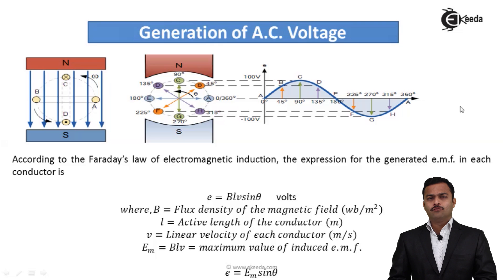So at that time, there won't be any cut of magnetic field by a conductor even if it is in motion. So what will happen if conductor starts moving like this, then magnetic flux is getting cut.